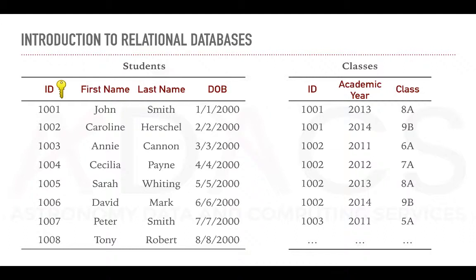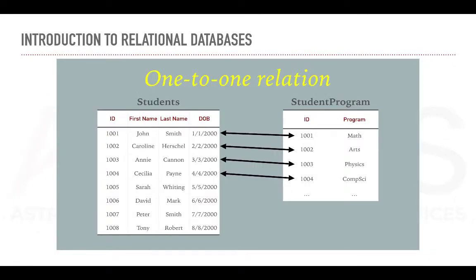The cardinality of a relationship type will constrain the number of occurrences that an item can appear in a table. Common cardinalities include one-to-one, one-to-many, and many-to-many. Let's look into a few examples. First up, the one-to-one relation. Here we have two tables. On the left, we have our regular students table. On the right, we have a student program table, indicating which program a student is following. In this case, a student is tied to a specific program and cannot take two. Hence a one-to-one relation.